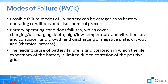Besides the failure modes related to individual battery cells, there are also modes related to the battery pack as a whole. These can be categorized as battery operating condition failures and chemical process failures. Battery operating condition failures cover charging and discharging paths, high and low temperature, vibration, grid corrosion, grid growth, discharging of the negative plate, dry out, and chemical processes.